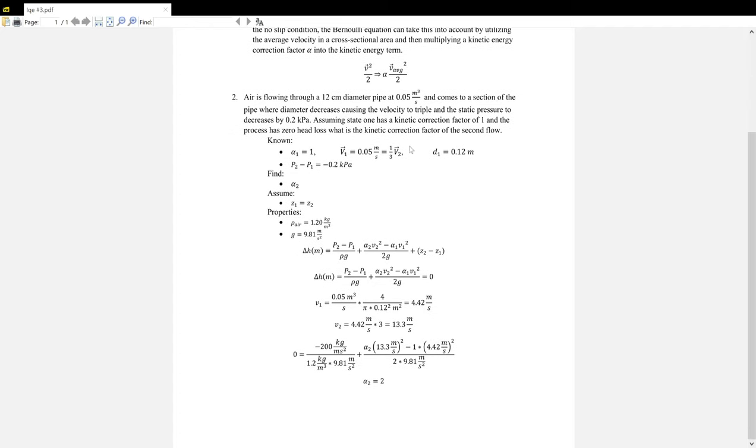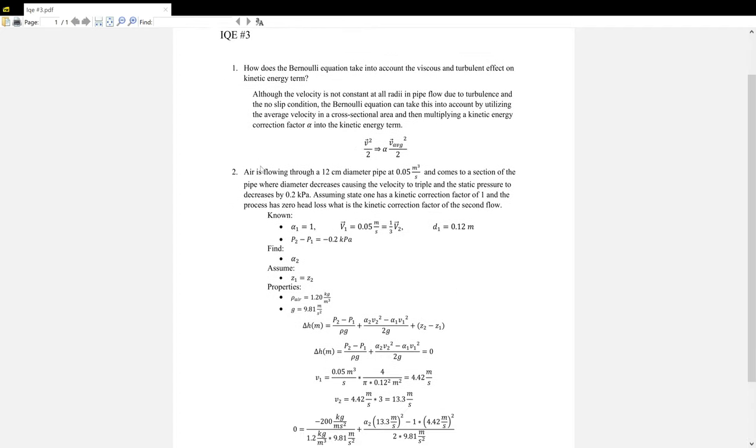And for number two, along the same lines, asking about the kinetic energy correction factor: we have air flowing through a 12-centimeter diameter pipe at 0.05 meters cubed per second. It comes to a section where the diameter decreases, which causes the velocity to triple and the static pressure to decrease by 0.2 kPa.